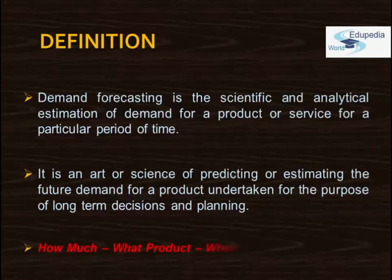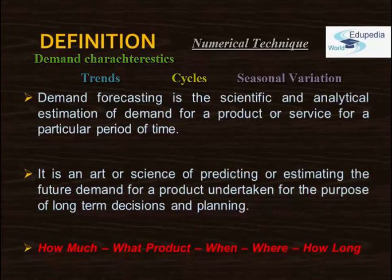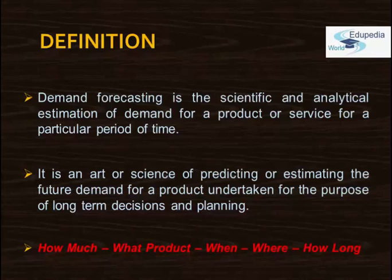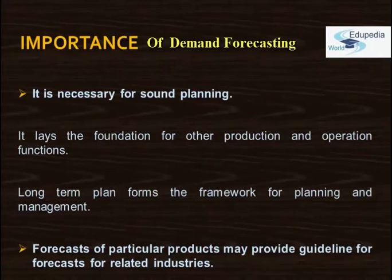What we understand from these definitions is that forecasting is the process of determining how much of what products are needed, when, where, and how long. Although future demand is highly random and affected by many factors, demand characteristics such as trends, cycles, and seasonal variations can be predicted using numerical techniques. However, too much emphasis should not be placed on mathematical or statistical techniques alone — they are not substitutes for judgment. What is needed is some common sense between pure guessing and too much mathematics.